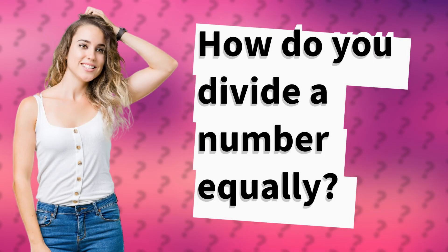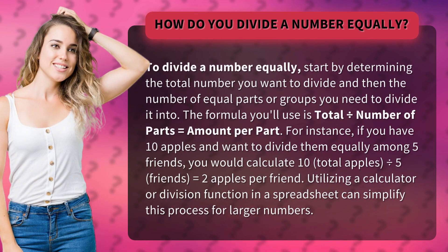How do you divide a number equally? To divide a number equally, start by determining the total number you want to divide and then the number of equal parts or groups you need to divide it into. The formula you'll use is: total divided by number of parts equals amount per part.